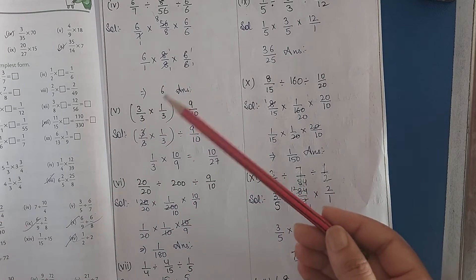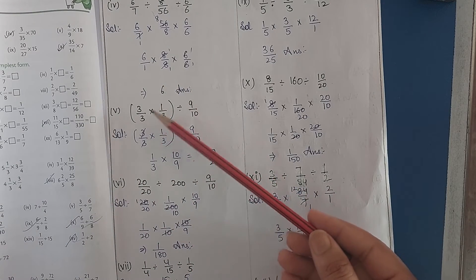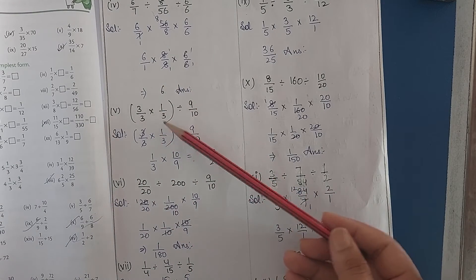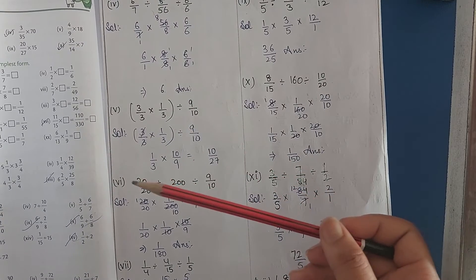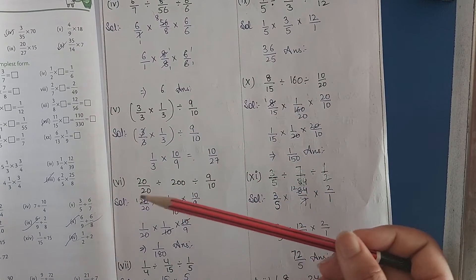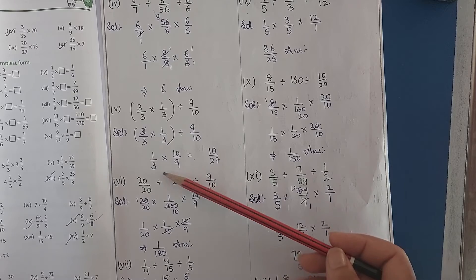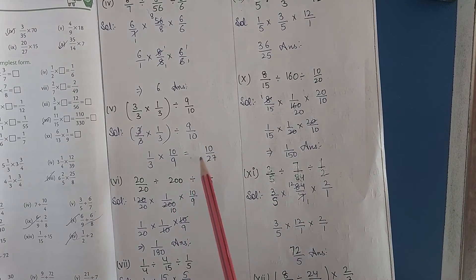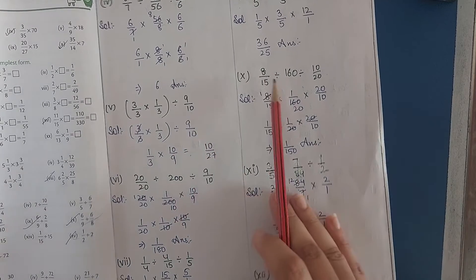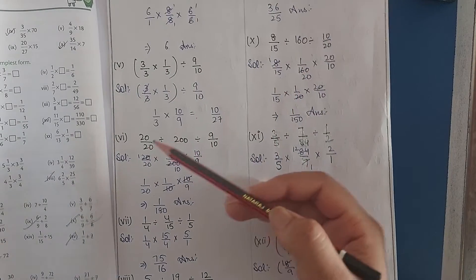Next: 3/3 multiplied by 1/3, divided by 9/10. That is 1/3 multiplied by 10/9, that is 10/27. This is our answer.